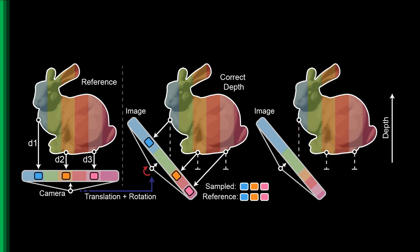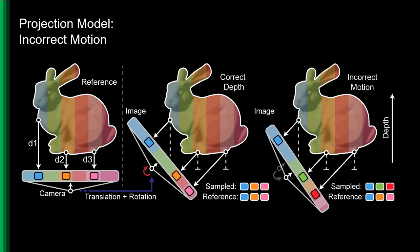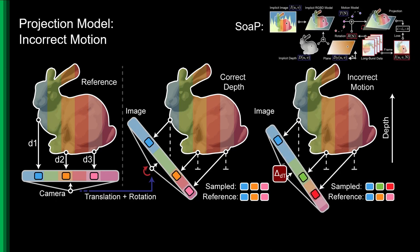If the depths are correct, but the camera motion is wrong, this produces a per-frame photometric loss, which is back-propagated to update the motion model.